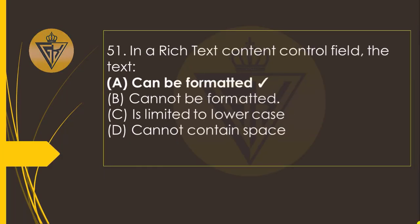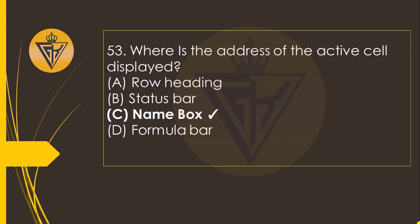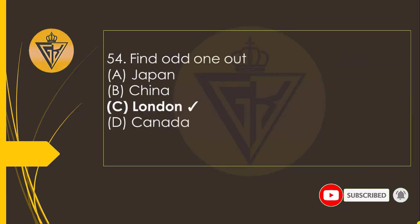Bismillahirrahmanirrahim. In a rich text content control field, the text is the option A, can be formatted. In Excel, compute this first — the option C: 2.5 by 5. Where is the address of the active cell displayed? The option C: Name Box. Find the odd one out — the option C: London.